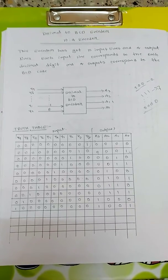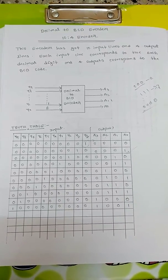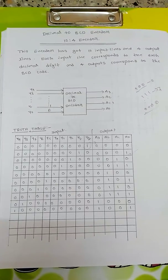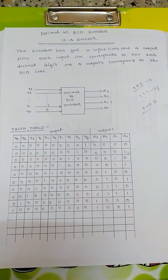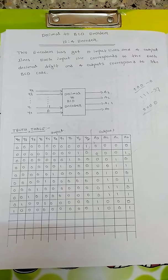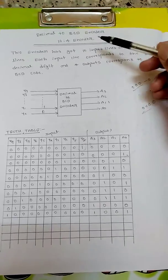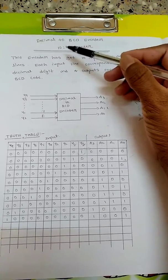Hello everyone, welcome. In this video we are going to discuss decimal to binary coded decimal encoder, that is decimal to BCD encoder. It is also called a 10-to-4 encoder because it has 10 input lines and 4 output lines.